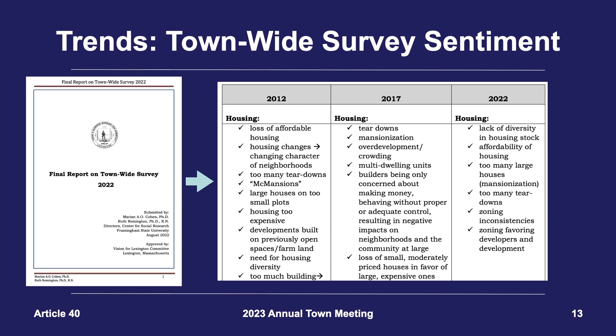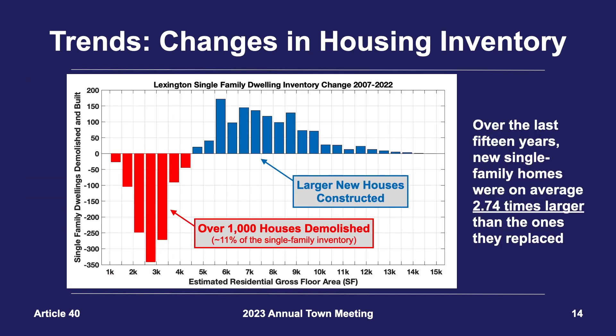Similar to the sentiments from the comprehensive plan public outreach, Lexington's town-wide survey has also catalogued a consistent trend in that residents are frustrated by the loss of smaller homes, the persistent building activity across town, and the construction of new large homes. We can also see those trends and sentiment through data.